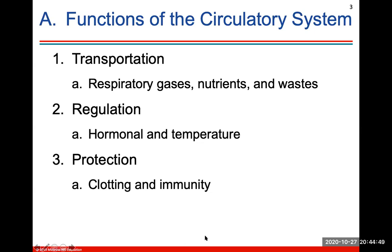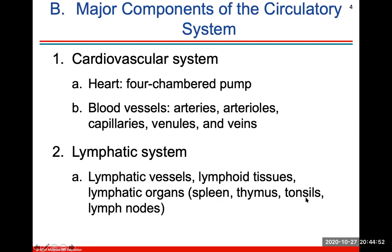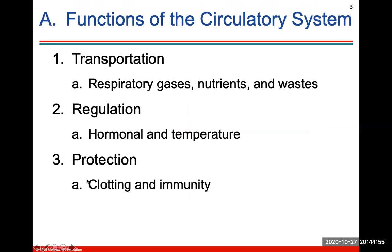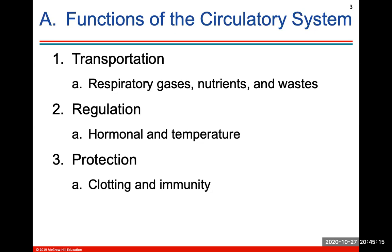Here we have the functions of your circulatory system. It consists of all blood vessels that transport oxygen and carbon dioxide throughout the body. The main functions are transportation of respiratory gases, nutrients, and wastes, regulation of hormones and temperature — hormones are transported in the bloodstream and blood vessels can constrict or dilate to help maintain temperature — and also protection, as white blood cells and clotting factors like platelets travel throughout the bloodstream.